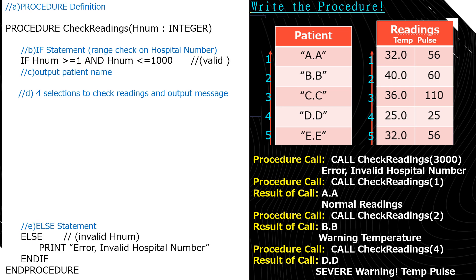The first line defines the procedure. We need the keyword PROCEDURE, the name check_readings, and brackets with the parameter — I'll call it hnum for hospital number — of type integer. At the very bottom, the last line is ENDPROCEDURE, so all statements are between those. The first statement is an IF: if hnum is greater than or equal to 1 AND hnum is less than or equal to 1000, that's a valid hospital number, and we perform steps c and d. ELSE we print 'error: invalid hospital number', ENDIF, ENDPROCEDURE.